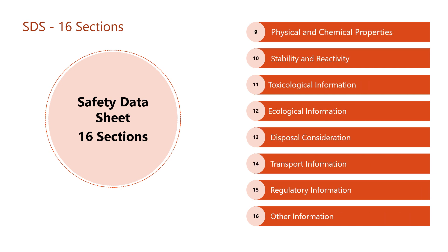Continuing the 16 sections: 9. Physical and chemical properties. 10. Stability and reactivity. 11. Toxicological information. 12. Ecological information. 13. Disposal considerations. 14. Transport information. 15. Regulatory information. 16. Other information, including information on preparation and revision of the SDS.